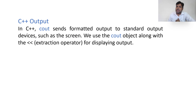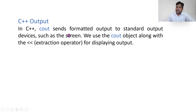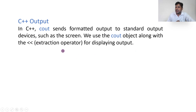Cout sends formatted output to the standard output device — the monitor. We use the cout object along with the extraction operator. These symbols are called extraction operators, and they are used for displaying output.